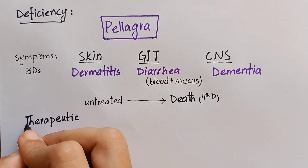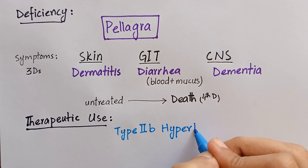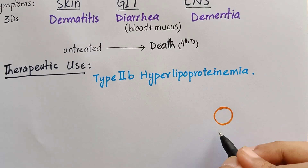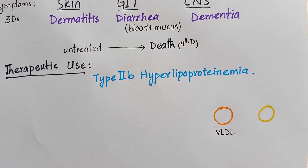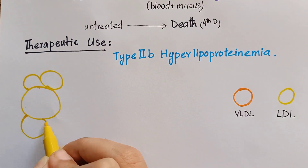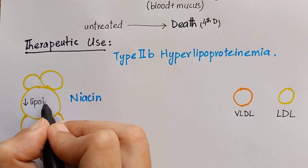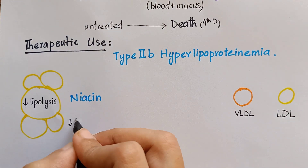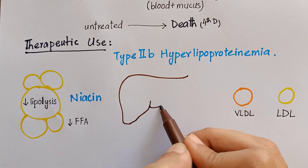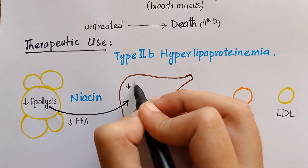Coming to the therapeutic uses of niacin, it is used in the treatment of type 2B hyperlipoproteinemia, in which both very low-density lipoprotein (VLDL) and low-density lipoprotein (LDL) are elevated. The mechanism of this therapy is that niacin inhibits lipolysis in adipose tissues, decreasing the circulatory free fatty acids. The liver normally uses these circulatory free fatty acids as a precursor for triacylglycerol synthesis.